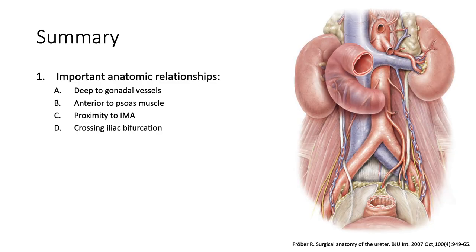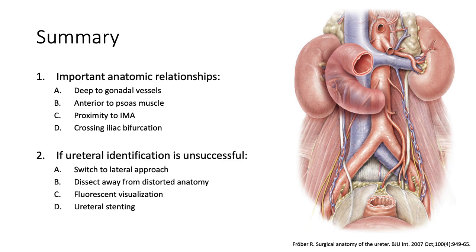In summary, this video reviewed the expected course of the left ureter during minimally invasive dissection of the colon. Important anatomic relationships reviewed include the position deep to the gonadal vessels, anterior to the psoas muscle, and proximity to the IMA for the intra-abdominal ureter, as well as relationship to the iliac bifurcation, sigmoid fossa, and lateral course for the pelvic ureter. If the ureter is unable to be identified with standard anatomy, maneuvers that can be performed include switching to a lateral approach, dissecting away from the disordered anatomy, or adding adjuncts like fluorescent visualization or ureteral stenting.